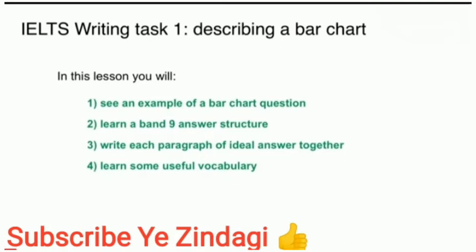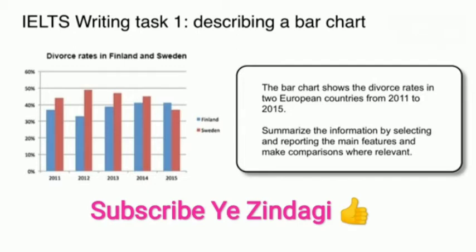In this video I am going to describe a bar graph, including vocabulary and detailed structure, by which you can achieve 7 bands — 7 plus bands.